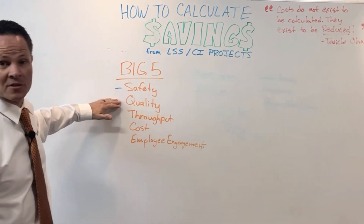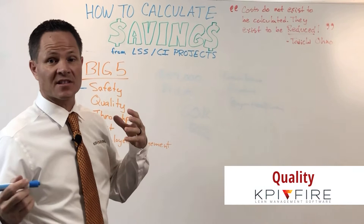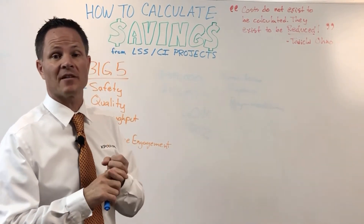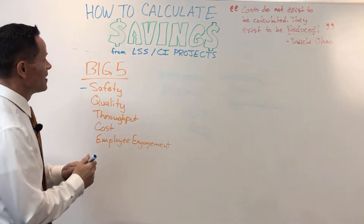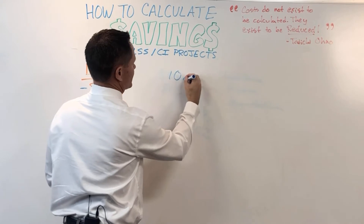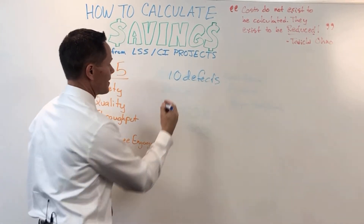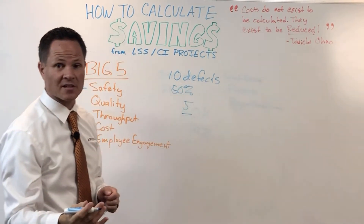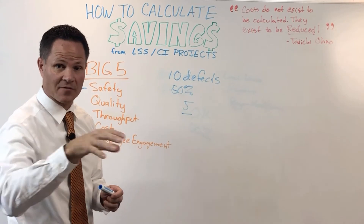Let's talk about number two: quality. How do you track the savings when you reduce defects, reduce scrap, or reduce rework? If I'm producing 10 defects every day and I reduce that by 50%, now I'm only producing five defects. The first thing I can do is track the cost of that unit.